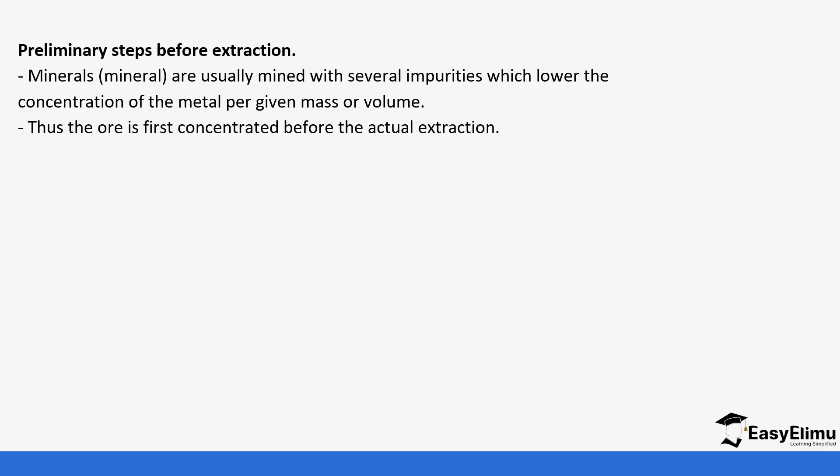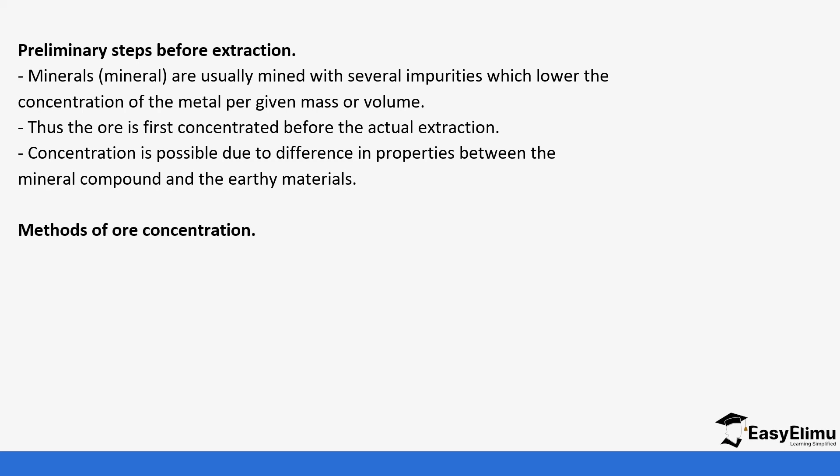What are some of the steps that the ores undergo before extraction? Minerals are usually mined with several impurities which lower the concentration of the metal per given mass. For example, when extracting gold, the amount of mud in the ore is so high and the amount of gold is less, so we need to remove those extra things so that the ore is first concentrated before the actual extraction. Concentration is possible due to the difference in properties between the mineral compounds and the earthly materials.